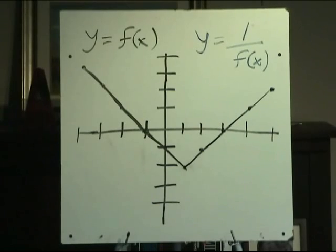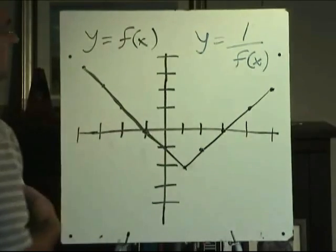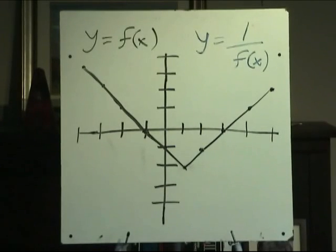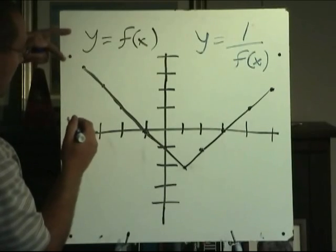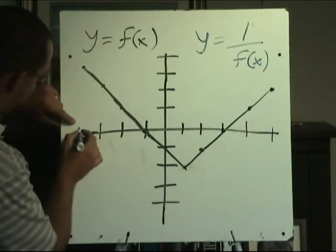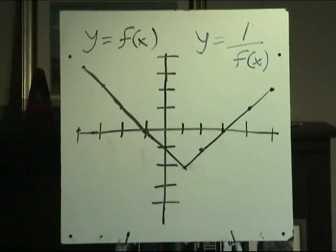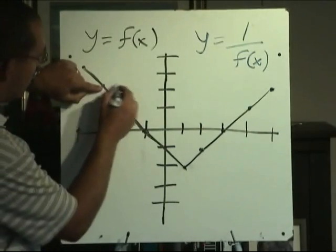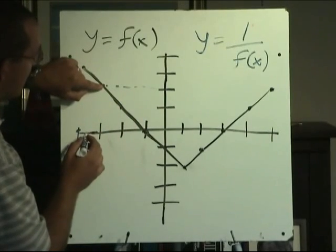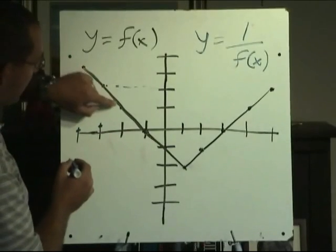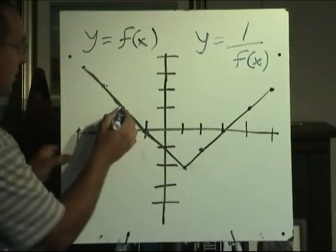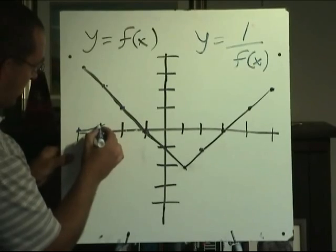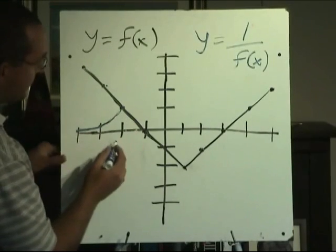Here's a graph in black we'll call y equals f of x, and what we're asked to do is graph the reciprocal y equals 1 over f of x. Remember, the reciprocal means we take the y values and flip them. The y value here is 3, so the new y value is going to be 1/3. This y value was at 2 so the new y value will be 1/2. This y value was 1, and the reciprocal of 1 is still 1.